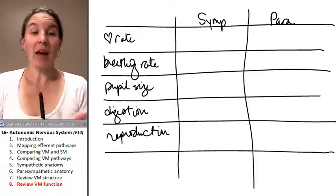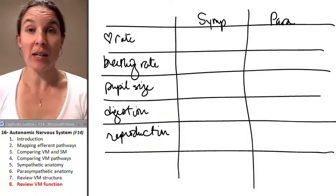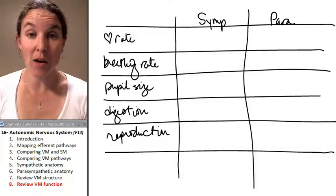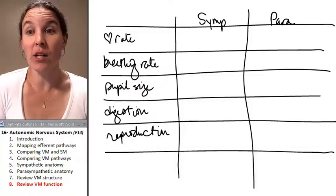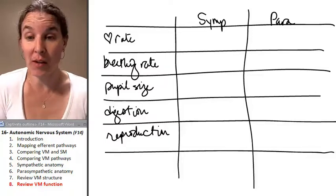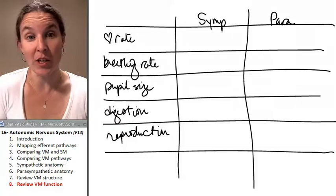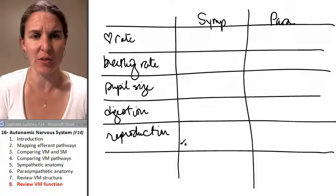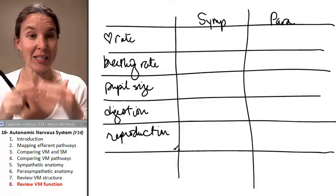So I'm going to expect that you can evaluate the effects of visceral motor innervation, sympathetic innervation or parasympathetic innervation on various characteristics. Let's look, let's speculate.